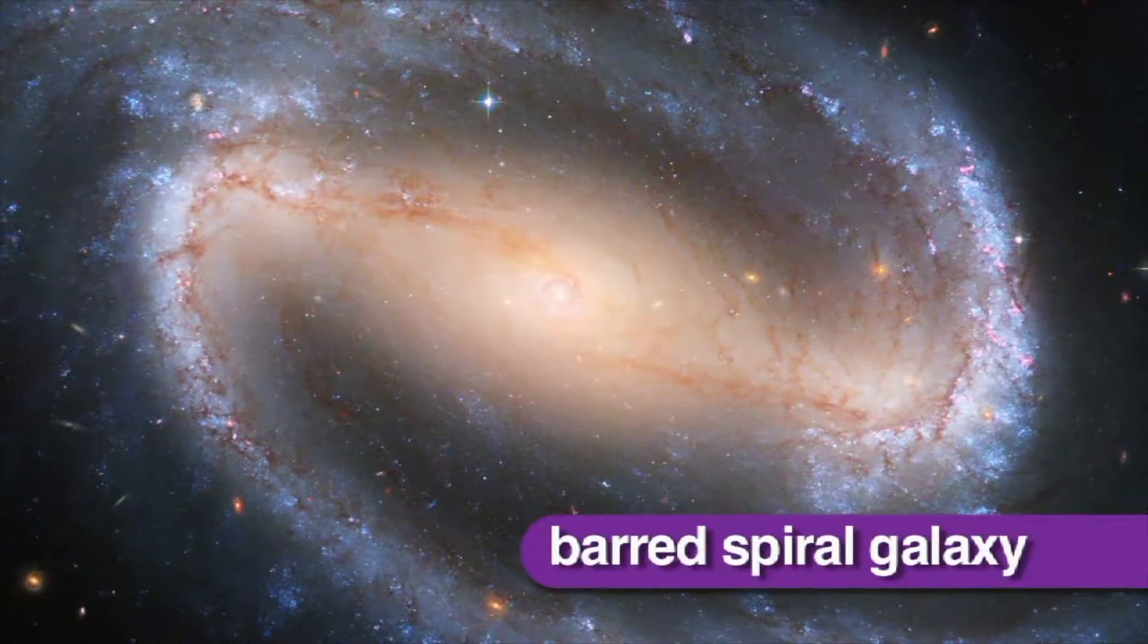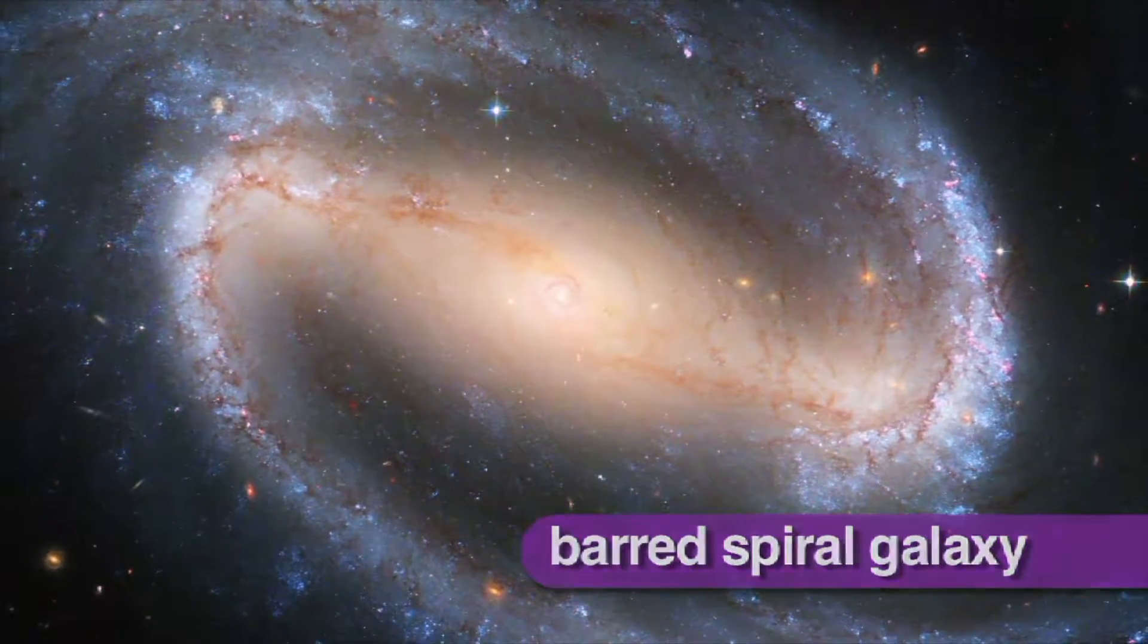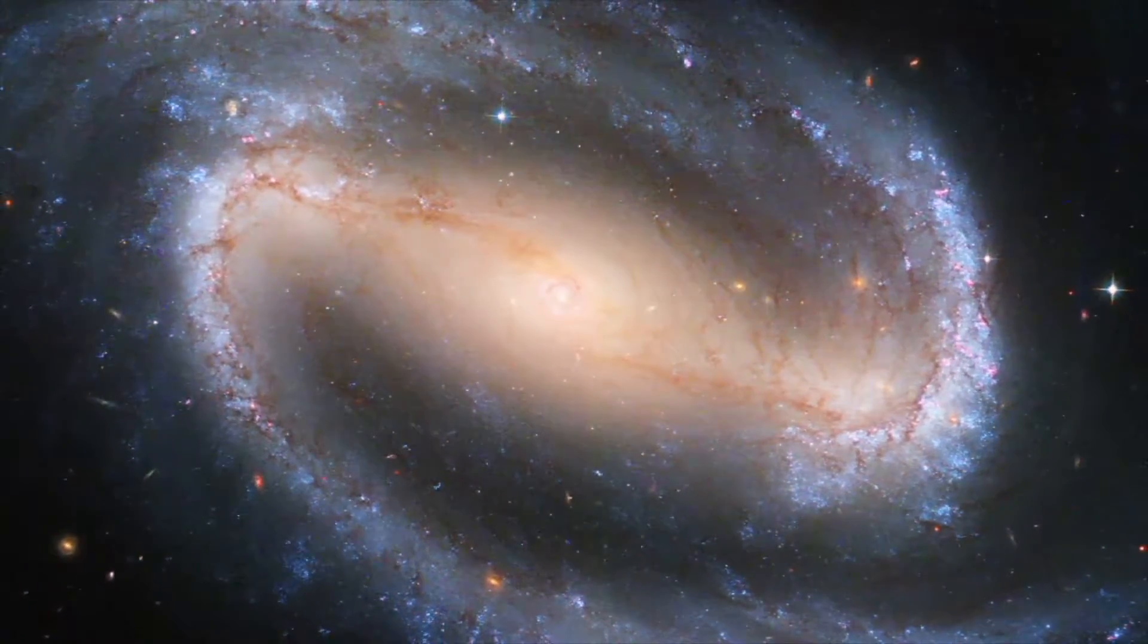Some, called barred spiral galaxies, have a long bar across the middle with spirals coming off the ends.